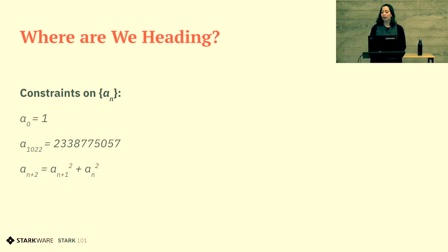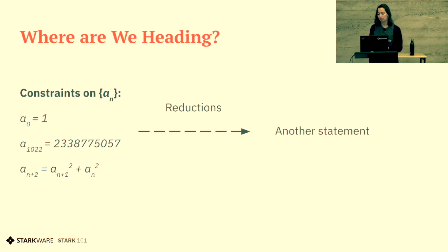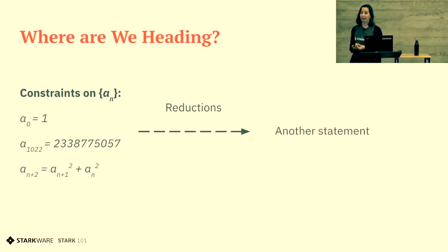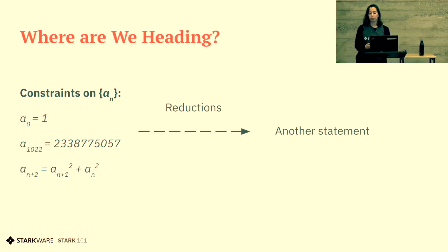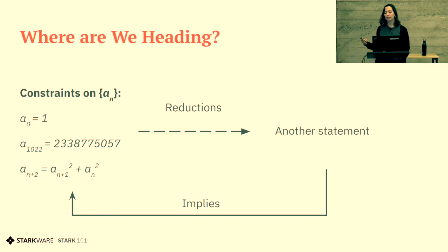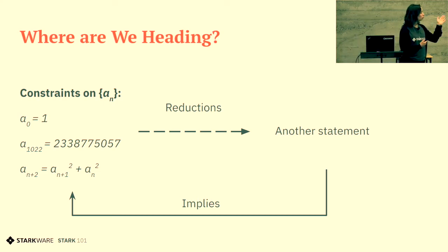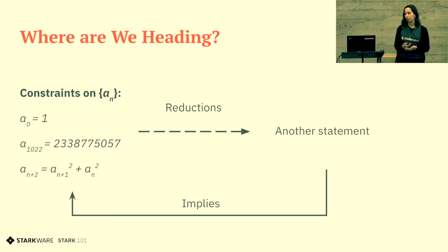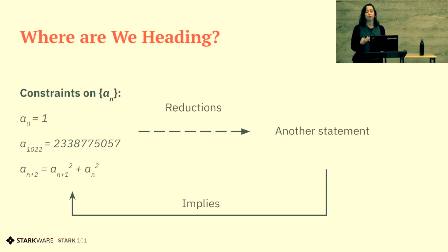In this talk, we are going to modify these three constraints. We are going to do a set of reductions to get another statement, a new statement in a different form. And this statement will be such that if it is true, it implies that these three constraints hold on our sequence. We are going to have three steps of reductions to get the new statement.